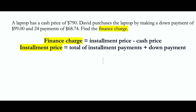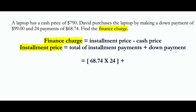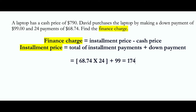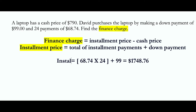As per our question, installment price equals total of installment payments — this refers to the monthly payments you make towards a purchase. As per the question, you made a monthly payment of $68.74 for 24 months. This amount plus the down payment of $99 made at the time of purchase gives a total of $1748.76. This is your installment price.